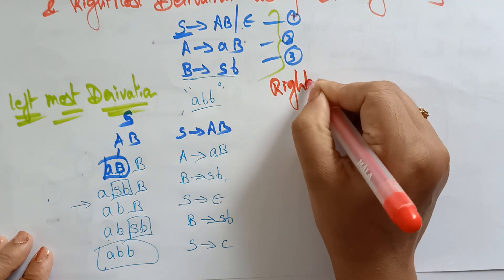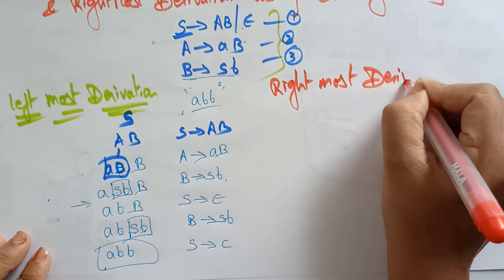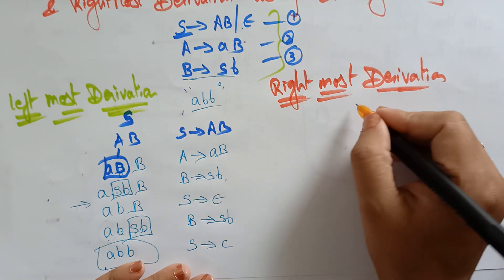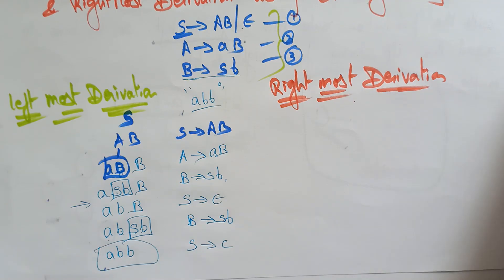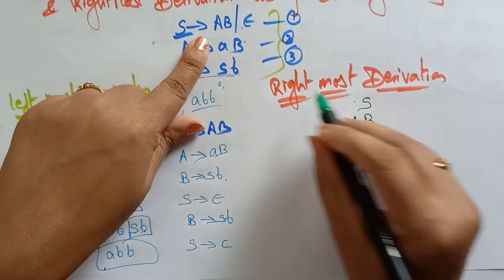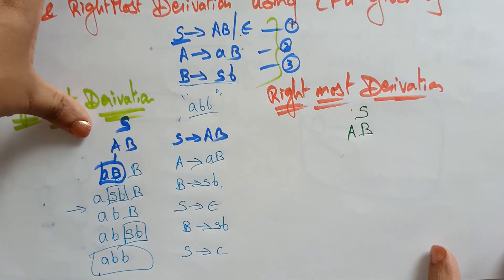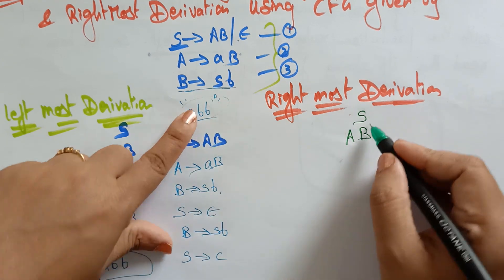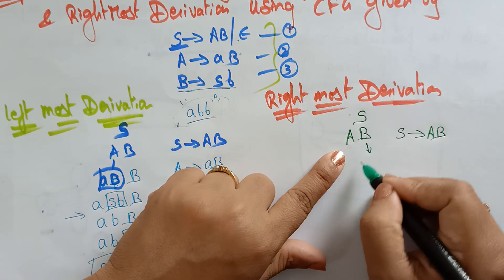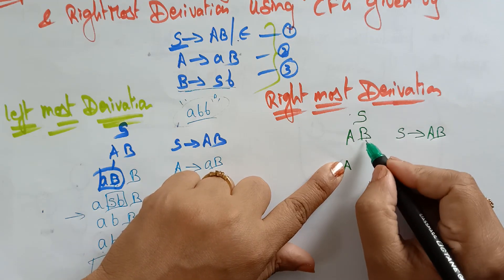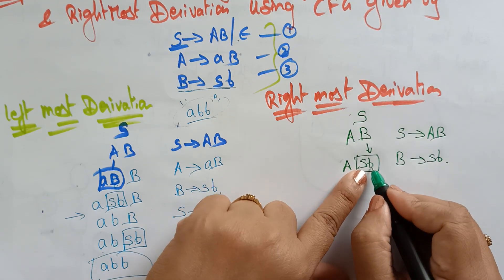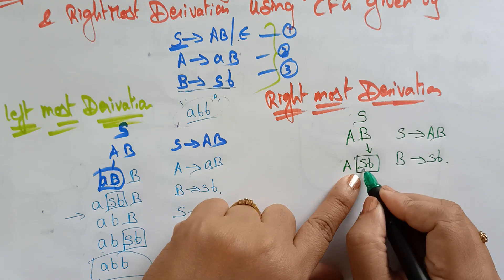Now let me take the rightmost derivation. In the rightmost derivation, we start with S. S can be replaced with aB — you can't replace with epsilon here, otherwise you can't derive the string. So S is replaced with aB. In rightmost derivation, concentrate on the right side — in place of B, write SB.